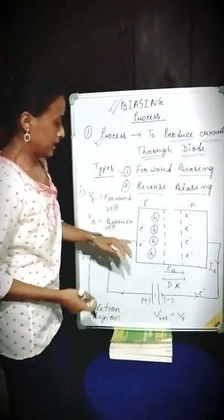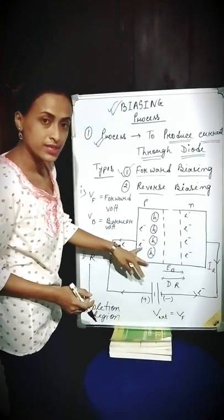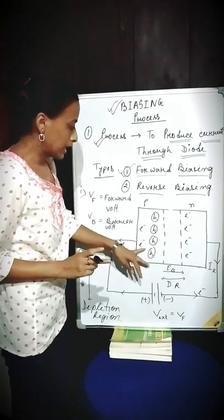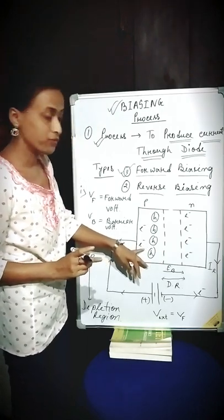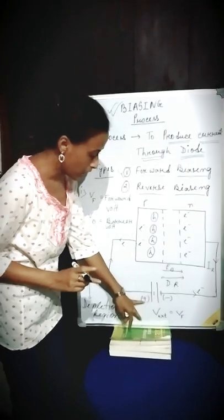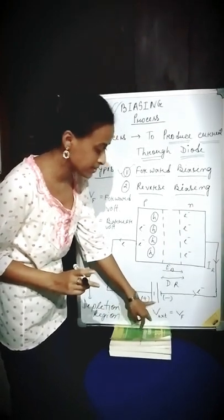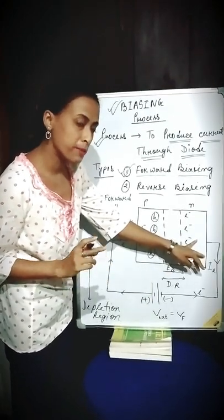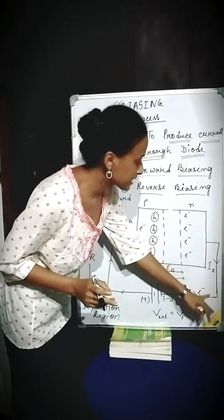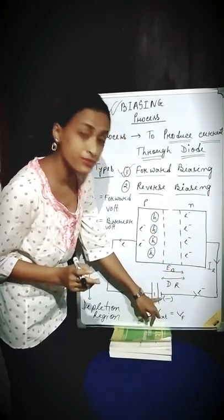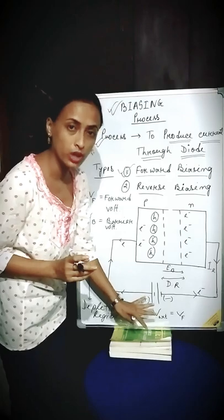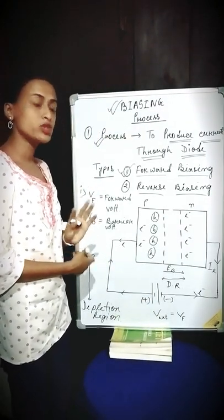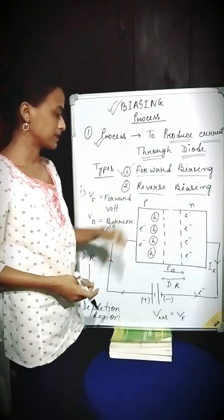Now let me explain. When we connect the P-type — remember, P means positive — when we connect the P-type of a diode with the positive terminal of an externally applied voltage, and the N-type — that means negative, remember — the N-type is connected with the negative terminal of an externally applied voltage, then we can get a biasing process which is called forward biasing.